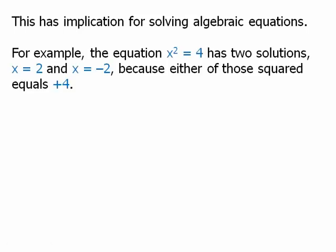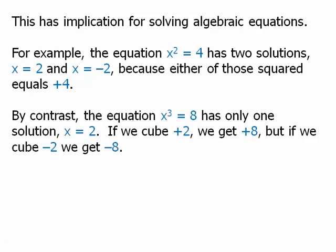This has implications for solving algebraic equations. For example, the equation x^2 = 4 has two solutions, x = 2 and x = -2, because either of those squared equals 4. By contrast, the equation x^3 = 8 has only one solution, x = positive 2. If we cube positive 2, we get positive 8, but if we cube negative 2, we get negative 8.